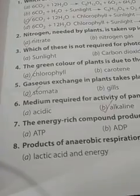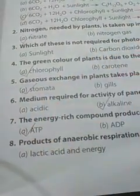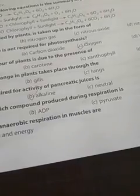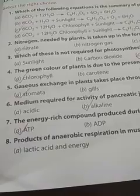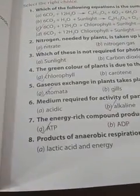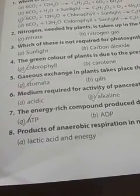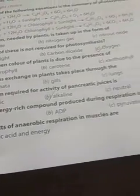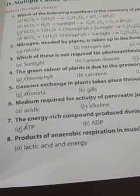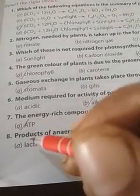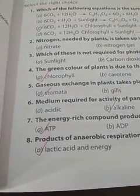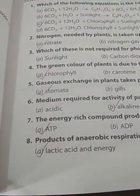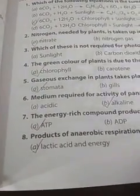Seventh: the energy-rich compound produced during respiration is ATP — adenosine triphosphate. Question number 8: products of anaerobic respiration in muscles are lactic acid and energy. This is called lactate fermentation. The answer is option A — lactic acid and energy.